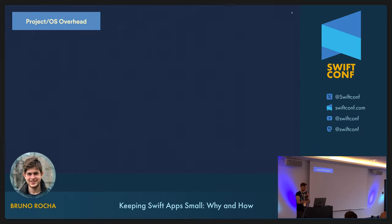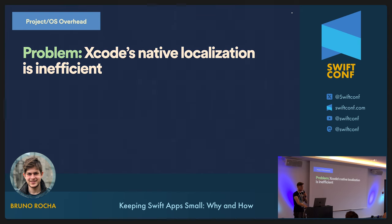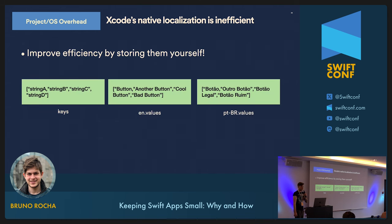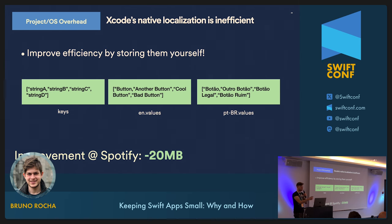Here's one example that only applies if you have multiple languages in your app. If your app is localized using Xcode's native localization features, you can save a lot of size by not doing that and doing your own thing instead. The string files Xcode generates are super inefficient — all the comments, whitespace, and duplicated keys are completely wasteful. If you support many languages like Spotify does, that's a lot of wasted space. Large companies post-process these files after the app is compiled so the data can be stored more efficiently. Combined with zipping those files afterwards, we can attribute almost 20 megabytes of reduced app size to just doing this.